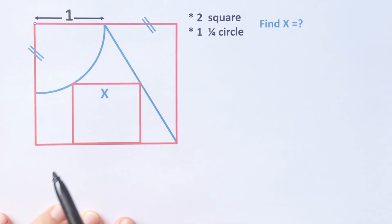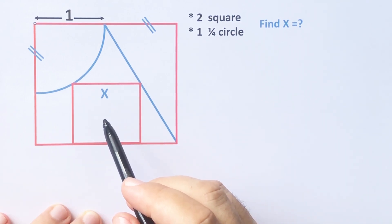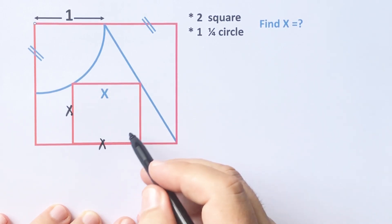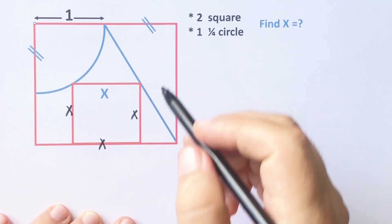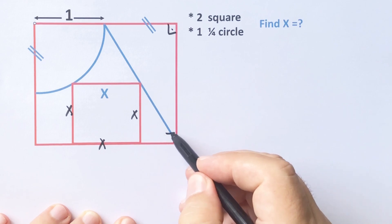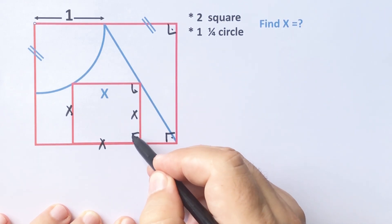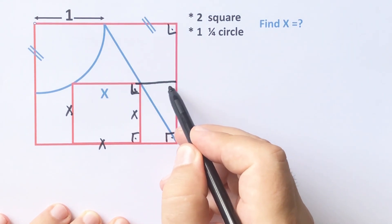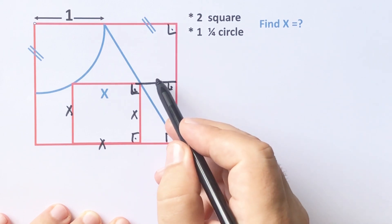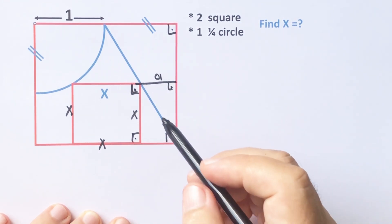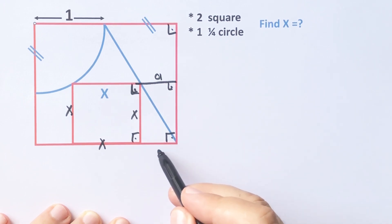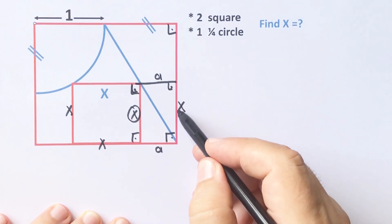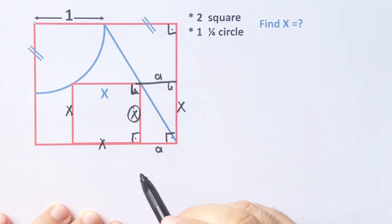x is what we need to find. First of all, we know that a square has four equal sides, so these sides are x units, and these angles are 90 degrees because of the square. If you draw a perpendicular line like this, let's call this length a units. So this length must also equal a, and if the side is x, this length must equal x units.